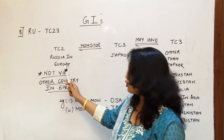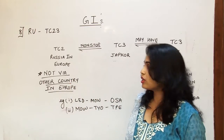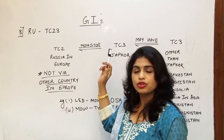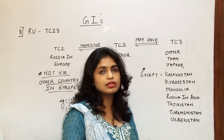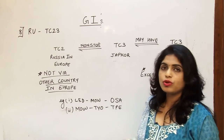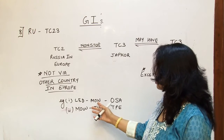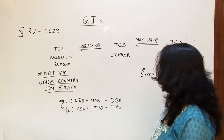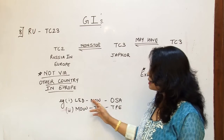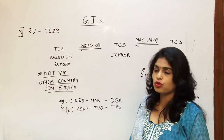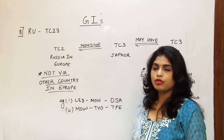To summarize the RU conditions: number one, it must originate in Russia in Europe; number two, it cannot be via any other European country; number three, it must be a non-stop journey to JAPCOR; and then it may continue to any other point in area 3, provided that point is not in the exceptional countries. The first example is St. Petersburg — Russia in Europe — going to Moscow, also Russia in Europe, and then non-stop to Osaka in Japan, with no further point in TC3. This is a typical example of RU.